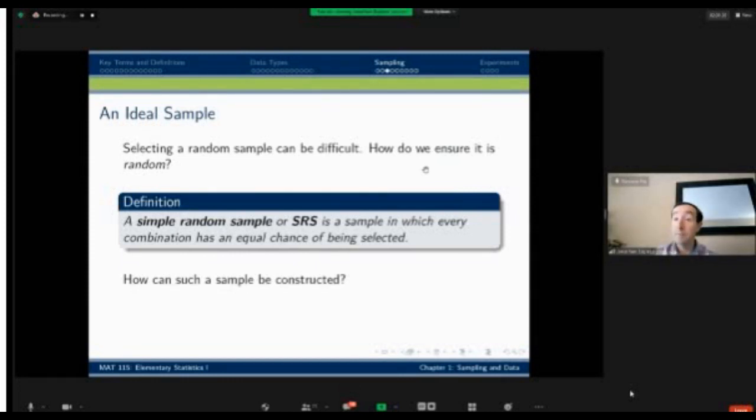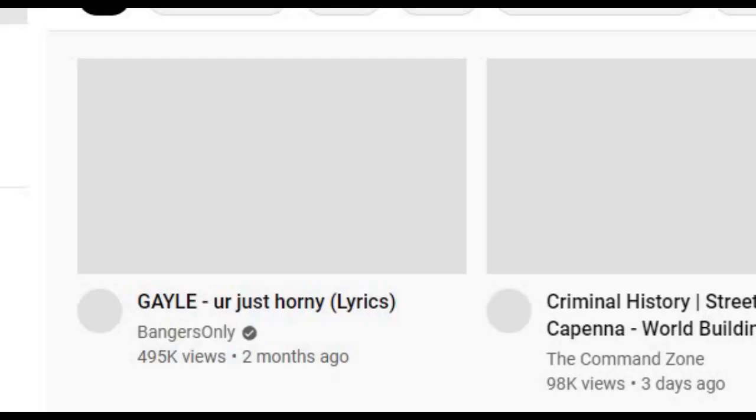The simplest, perhaps not by accident, is called a simple random sample. And all we need there is if I consider every possible combination of individuals in my population, if every single possible combination is equally likely, then that is what's called a simple random sample.